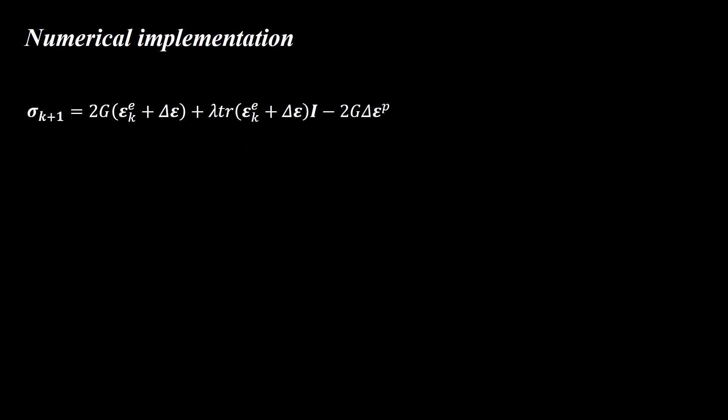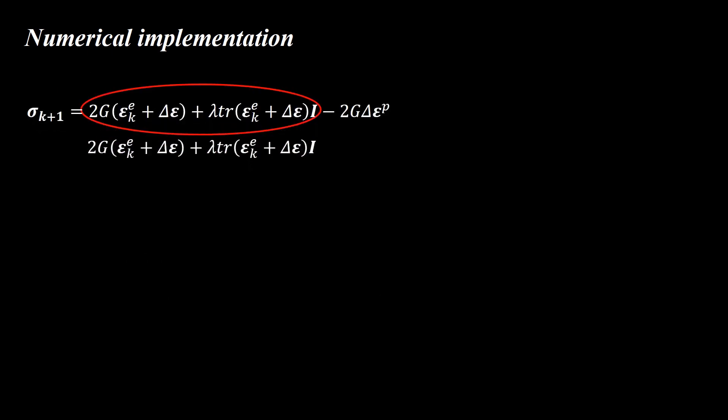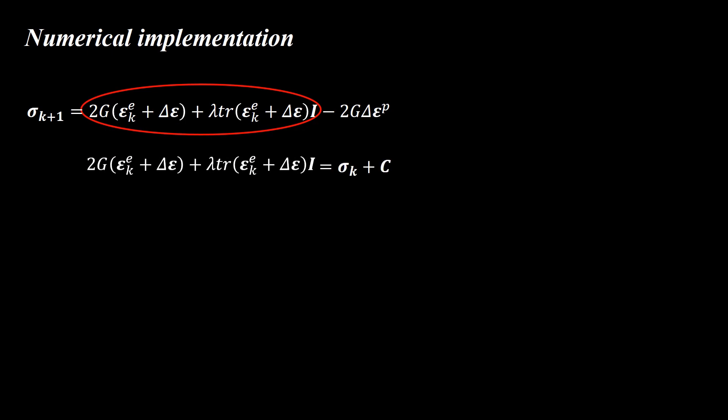Interestingly, the first part of the resulting equation equals the stress at the beginning of the increment plus the stiffness matrix multiplied by the total strain increment. In other words, if we assume the strain increment is totally elastic, we can calculate the stress at the end of the increment by this equation — this term is known as the elastic predictor or trial stress. The next term accounts for the plastic part of the strain increment and is known as the plastic corrector. We can write the plastic strain increment based on the normality hypothesis as follows.